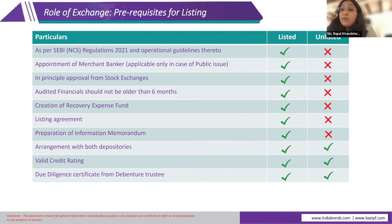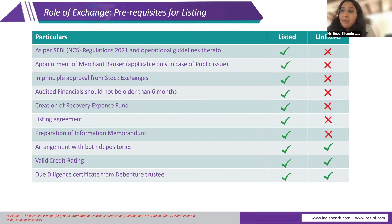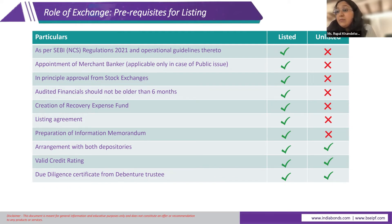SEBI has introduced a recovery expense fund — a fund maintained with the exchange by the company for legal expenses when a company goes into a problematic situation. When a company gets listed, they enter into a listing agreement, committing to ongoing disclosure of basic details to the stock exchange. This is a binding agreement between the exchange and the issuer, where the exchange provides a platform to disseminate information about the company's performance and growth.